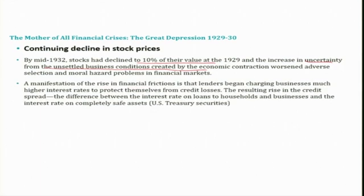A manifestation of the rise in financial friction is that lenders began charging businesses much higher interest rates to protect themselves from credit losses. Because of financial friction, those lenders remaining in the market started charging high interest rates. The resulting rise in the credit spread — that is, the difference between the interest rate on loans to households and businesses and the interest rate on the completely safe asset, US Treasury securities — increased significantly.